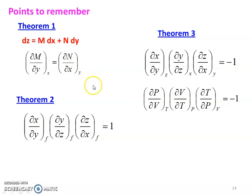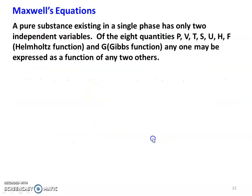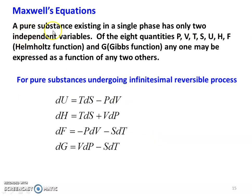Now, using the first theorem, we are going to derive Maxwell's equation. A pure substance existing in a single phase has only two independent variables. Of the eight quantities in thermodynamics — there are eight important properties as discussed in the previous lecture — Pressure, Volume, Temperature, Entropy, Internal Energy, Enthalpy, Helmholtz Function and Gibbs Function — any one may be expressed as a function of any other two variables.